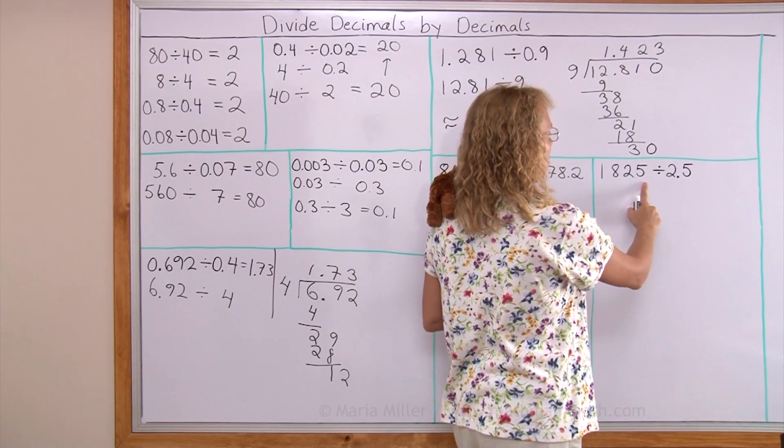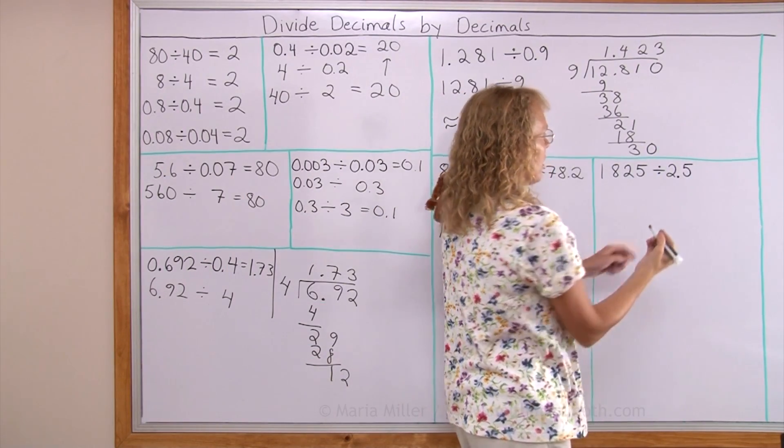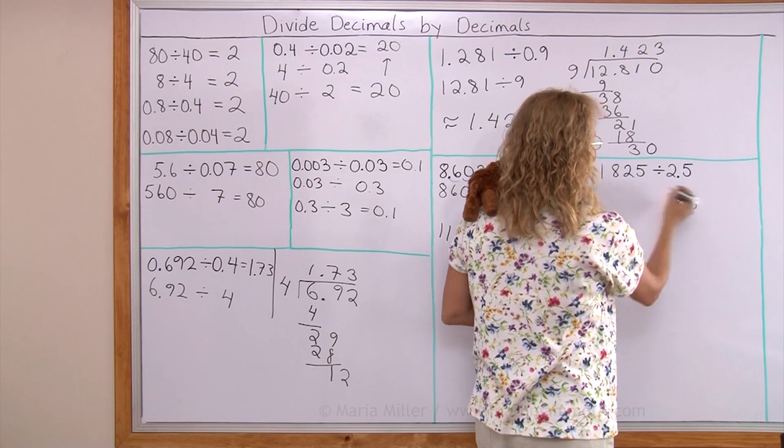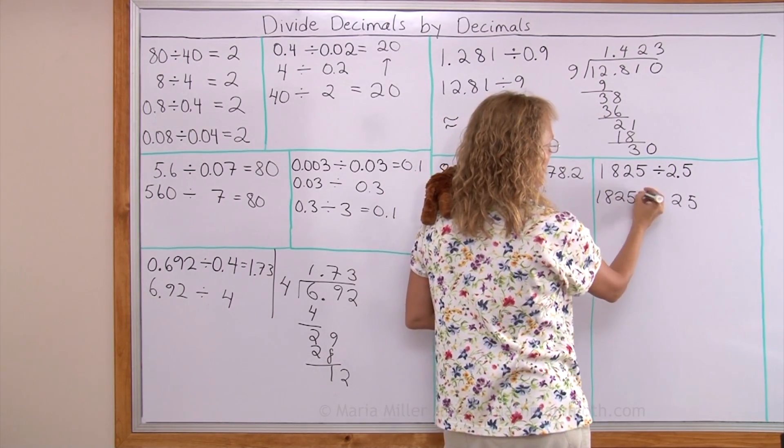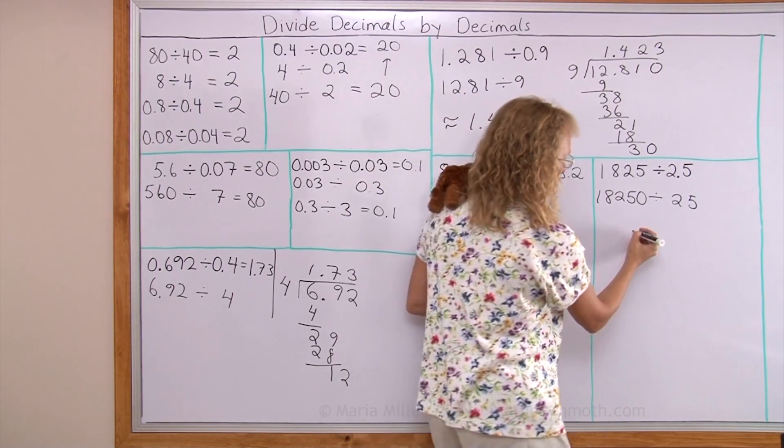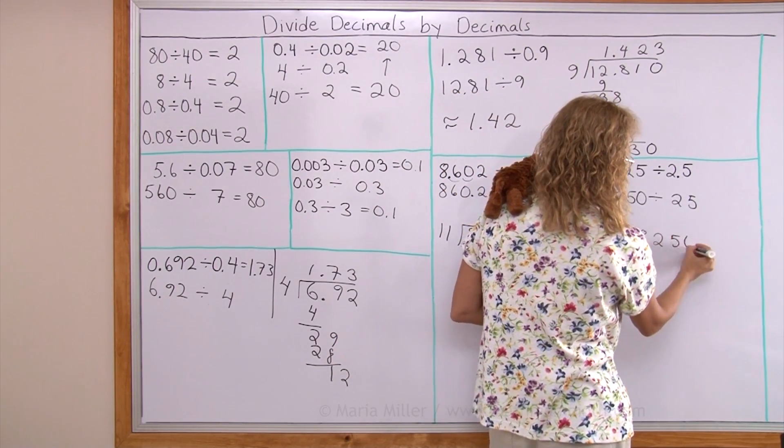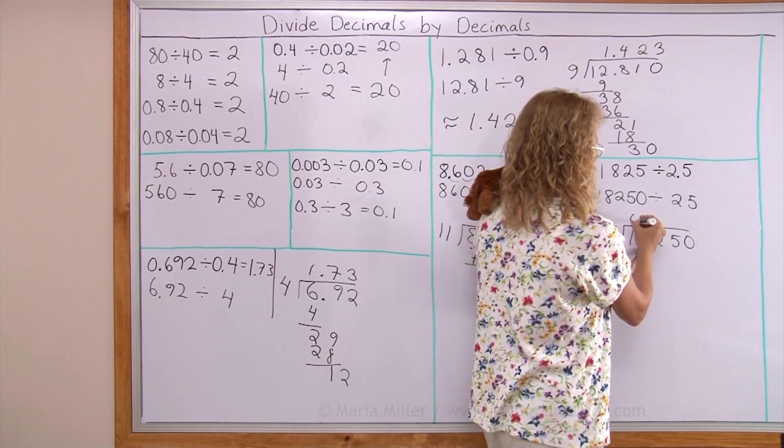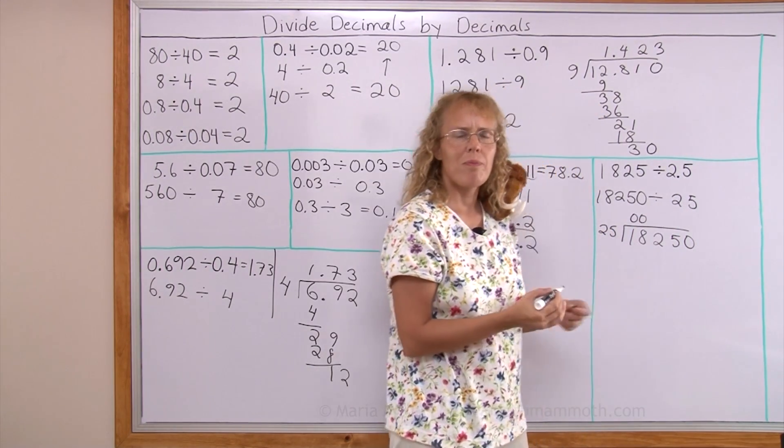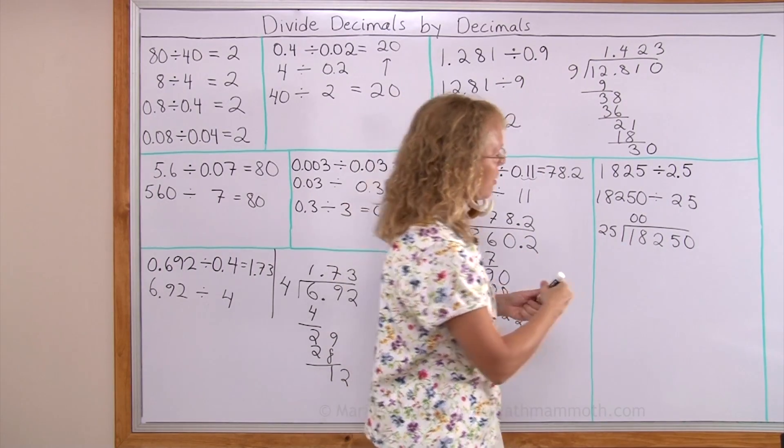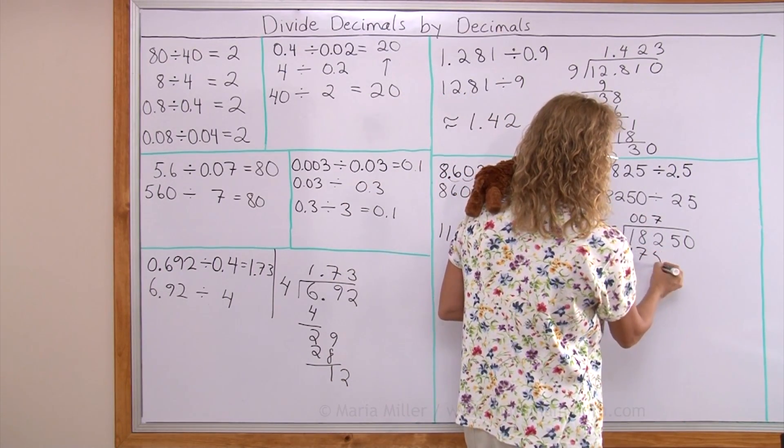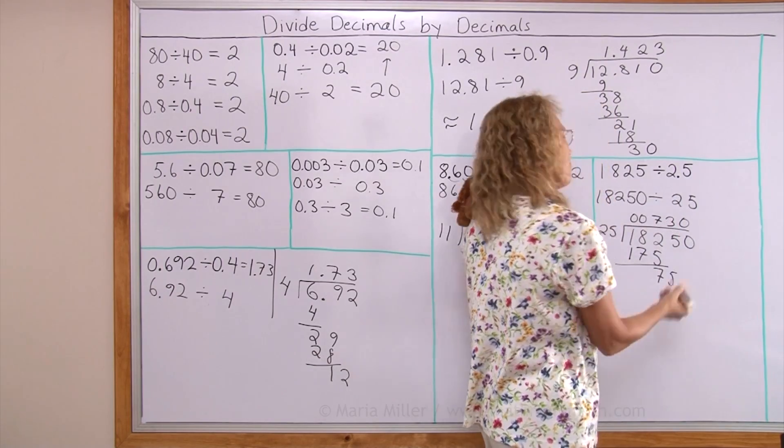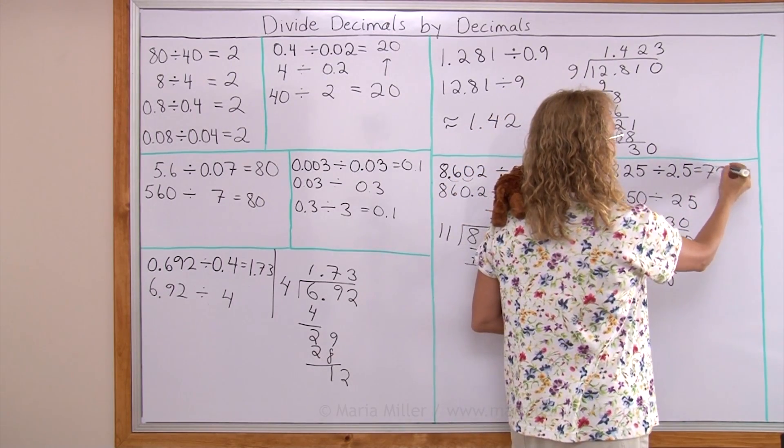And lastly here, a whole number here, divided by 2.5. I'll change this to 25 by multiplying by 10. And then I multiply this by 10 too. And now I have a whole number division. 25 goes to 18. Zero times. To 182. Now to 100 it goes 4 times. 7 times. That's 175 here. And then 7. 75. It goes 3 times. Now we have an even division. It's all done. So this is exactly 73. So we're all done.